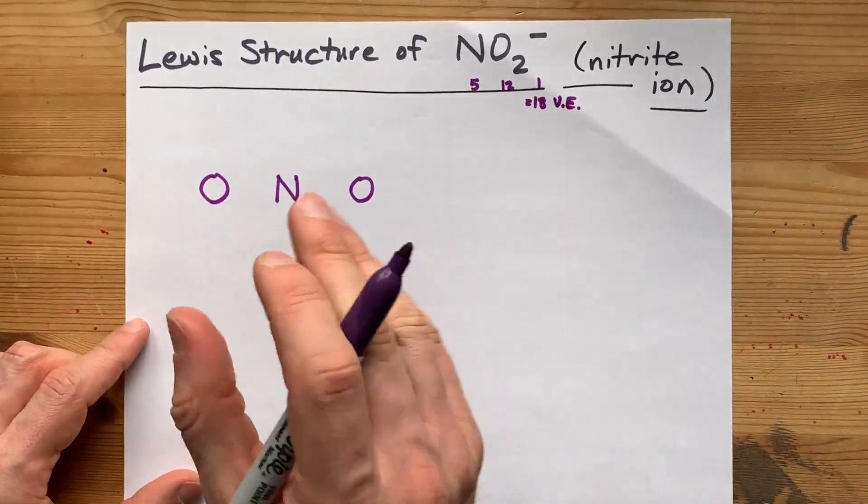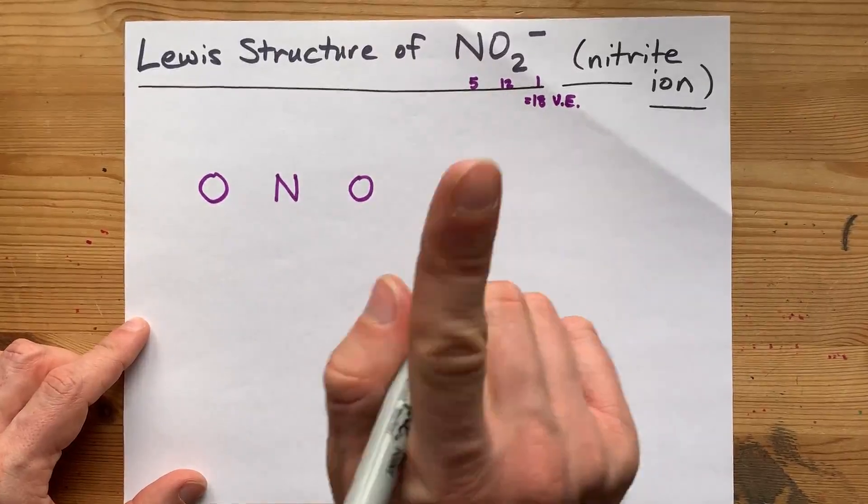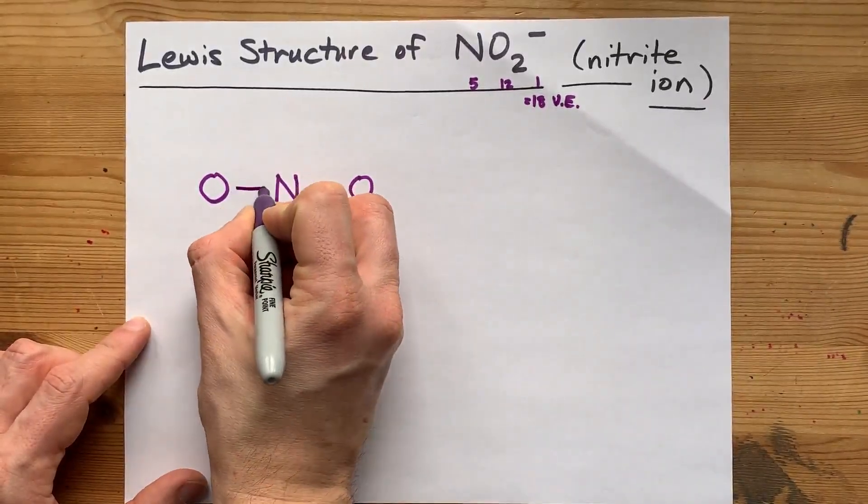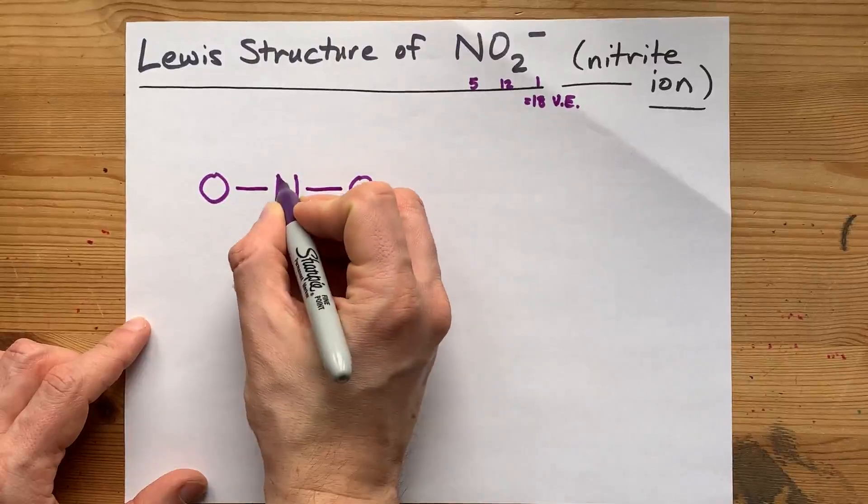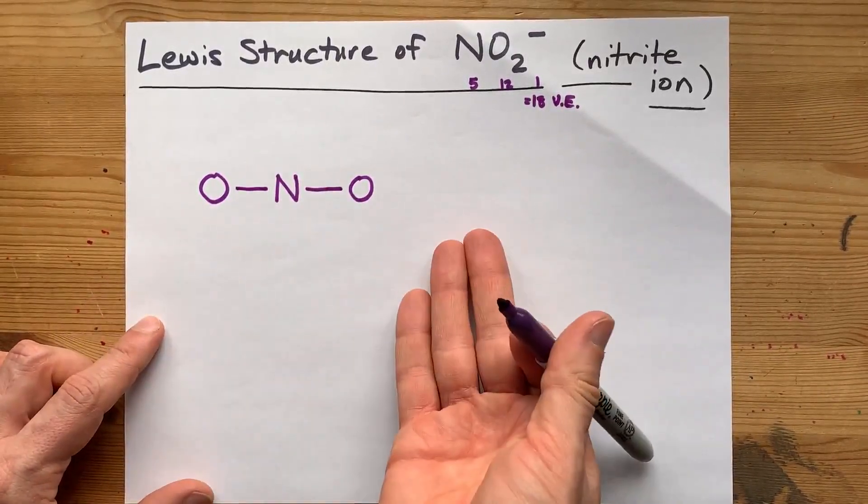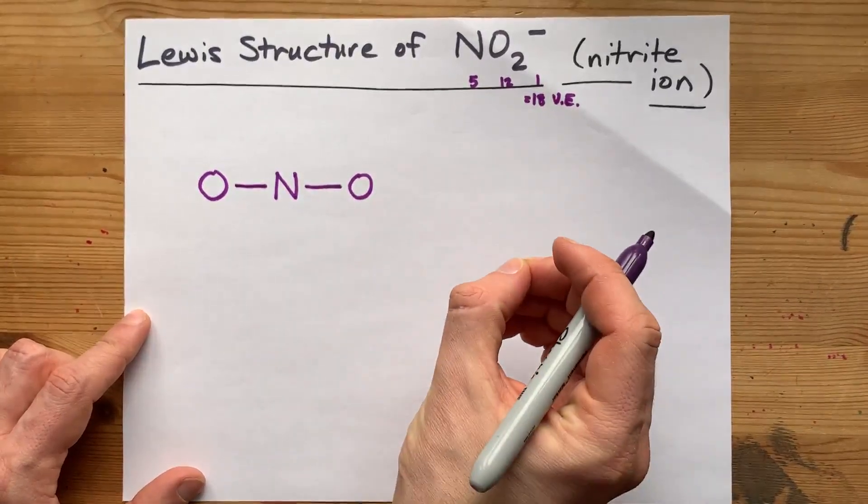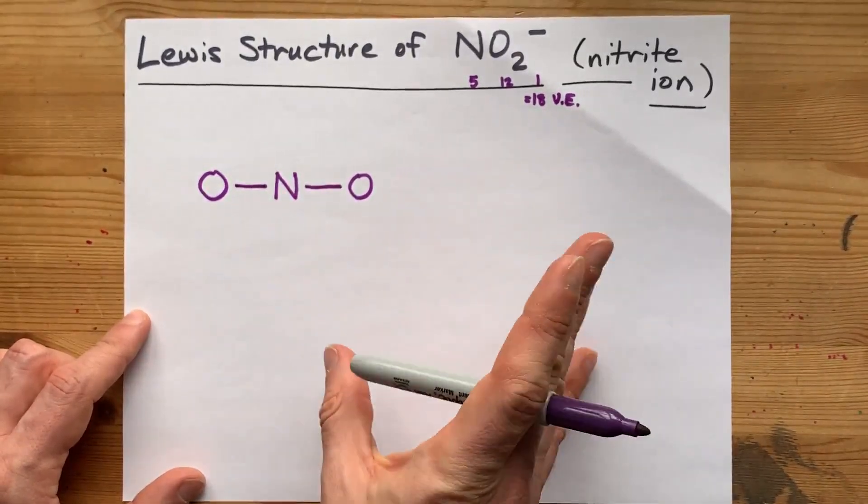My method for drawing Lewis structures between only non-metals is step one: give yourself a single bond between the central atom and all the others. If they weren't held together with at least single bonds, it wouldn't be a particle. Then I complete the octets on the outer atoms first.